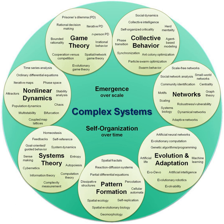Complex adaptive systems are special cases of complex systems. They are complex in that they are diverse and composed of multiple, interconnected elements; they are adaptive in that they have the capacity to change and learn from experience. In contrast to control systems in which negative feedback dampens and reverses disequilibria, complex adaptive systems are often subject to positive feedback, which magnifies and perpetuates changes, converting local irregularities into global features. Another mechanism, dual-phase evolution, arises when connections between elements repeatedly change, shifting the system between phases of variation and selection. The term complex adaptive system was coined at the Interdisciplinary Santa Fe Institute by John H. Holland, Murray Gell-Mann and others.